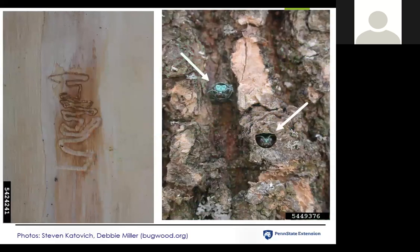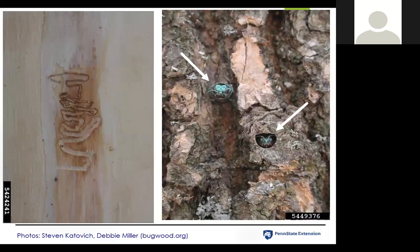This is what the boring looks like on the inside of the wood. The larvae make an S-shaped curve as they're feeding through the phloem of the tree, and as they emerge they create what's described as a D-shaped hole — you can see that on the picture on the right. There you can see the emergence of the emerald ash borer in that D-shaped hole, which is another key characteristic compared to other natural insects in the forest.